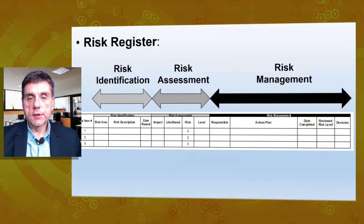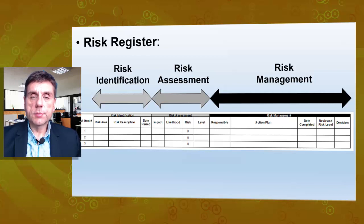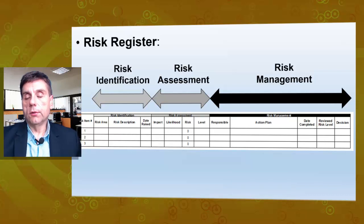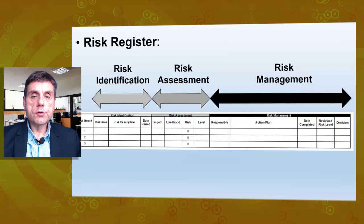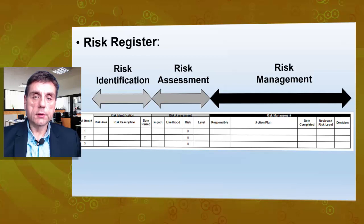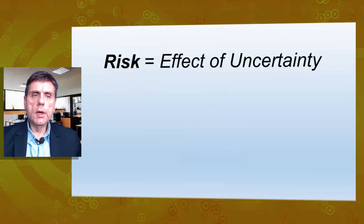In the risk management area or process, we should assign responsibility for who is going to manage the particular risk, define the action plan, the date that the action or actions would be completed, and then review the new risk level and make a decision about the particular risk.